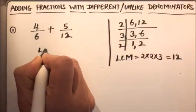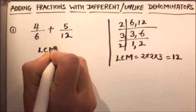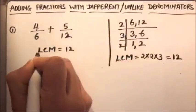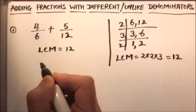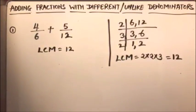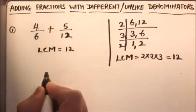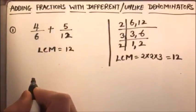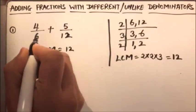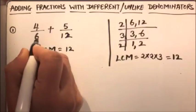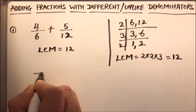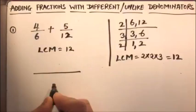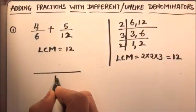The LCM is twelve. Now, why are we finding a common denominator? So that we can write the fractions as equivalent fractions. For four over six, if we make the denominator twelve, we'll write the common denominator as twelve.